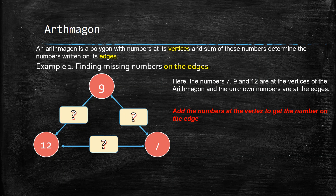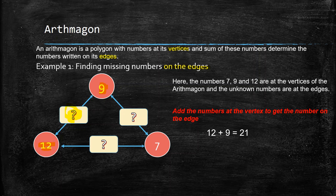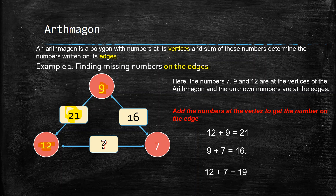To find the number on the edge, add the numbers at the vertices. The numbers 7, 9, and 12 are at the vertices. To find the missing number on the edge, we take 12 plus 9, and then write the answer on that edge. So 12 plus 9 is 21, and 21 is put between 9 and 12. 9 plus 7 is 16, so 16 is put between 9 and 7. 12 plus 7 is 19, so 19 is put between 12 and 7.